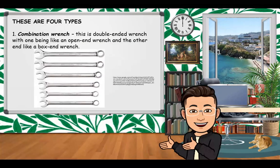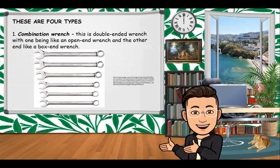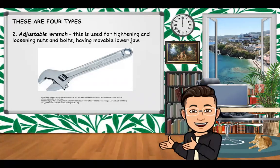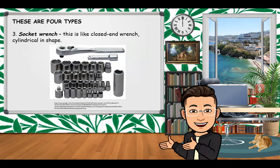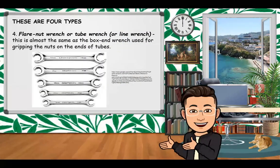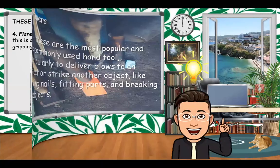There are four types of wrenches. The combination wrench is double-ended, with one end like an open-end wrench and the other like a box-end wrench. The adjustable wrench is used for tightening and loosening nuts and bolts and has a movable lower jaw. The socket wrench is like a closed-end wrench, cylindrical in shape. The flare nut wrench, also called a tube wrench or line wrench, is similar to the box-end wrench and is used for gripping nuts on the ends of tubes.